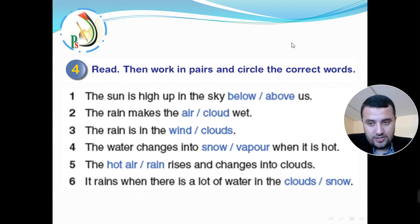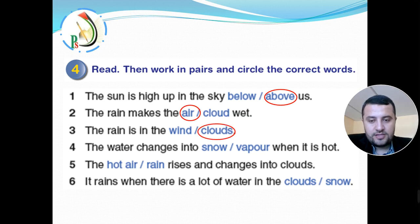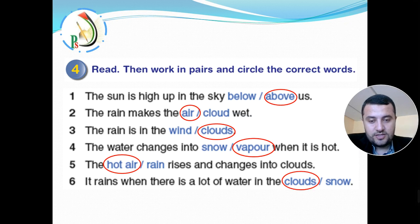Let's check the answers. One: the sun is high up in the sky above us. Two: the sun makes the air hot. Three: the rain is in the clouds — not in the wind. Four: the water changes into vapor when it's hot. Five: the hot air rises and it changes into clouds. And the last sentence: it rains when there is a lot of water in the clouds. If you answered all of them correctly, you are amazing.